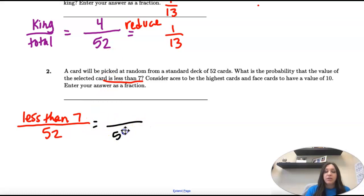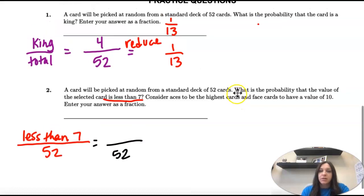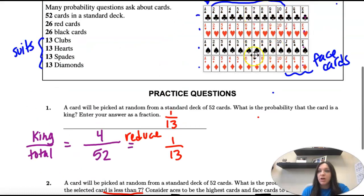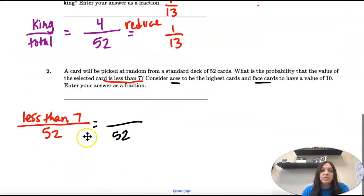So we need to go count how many cards are less than seven, not including aces or face cards. We're not including seven, it's not less than or equal to, it's just less than. So we have our sixes, the fives, the fours, the threes, and our twos.